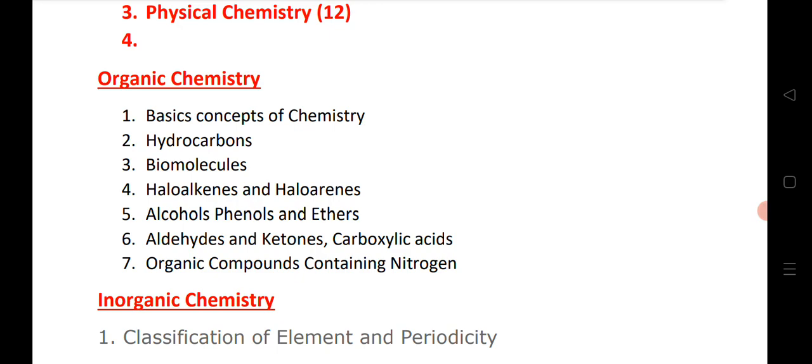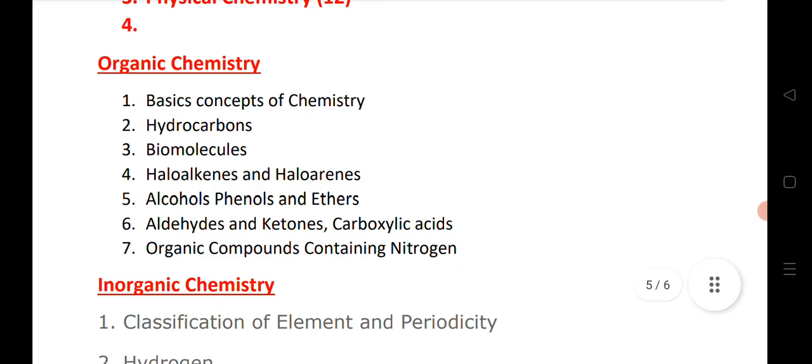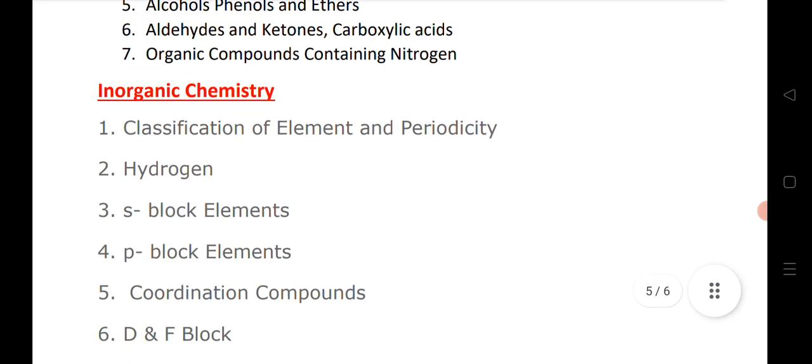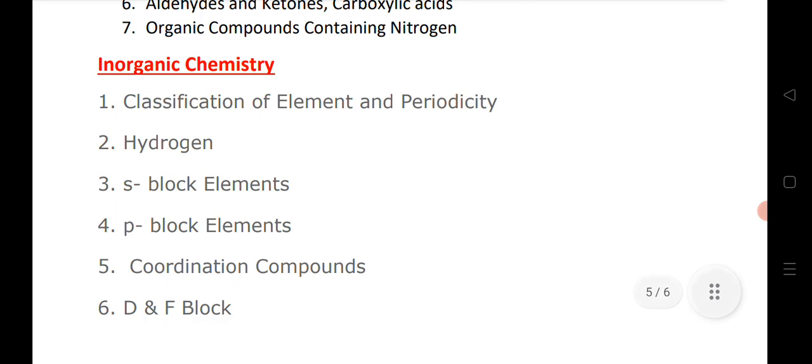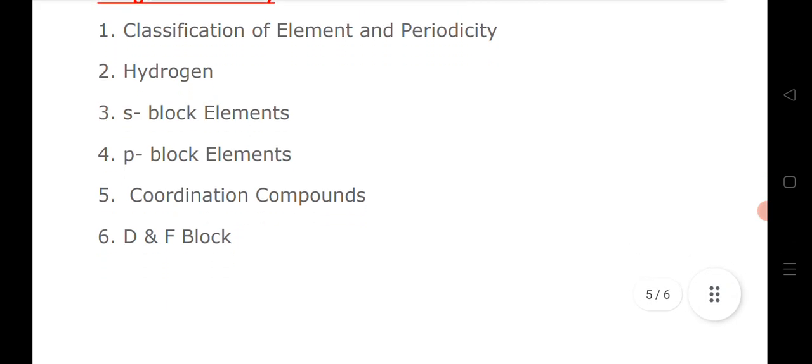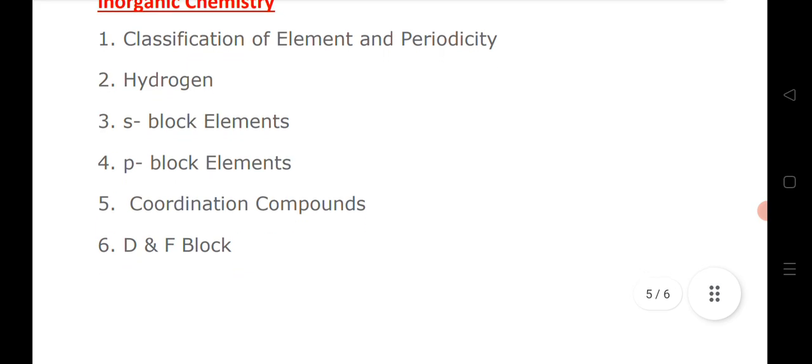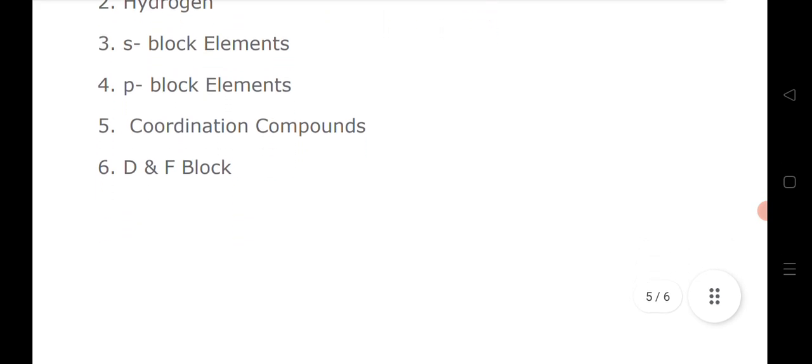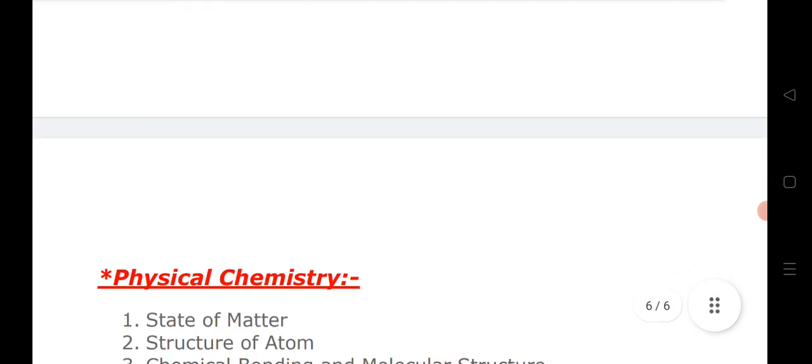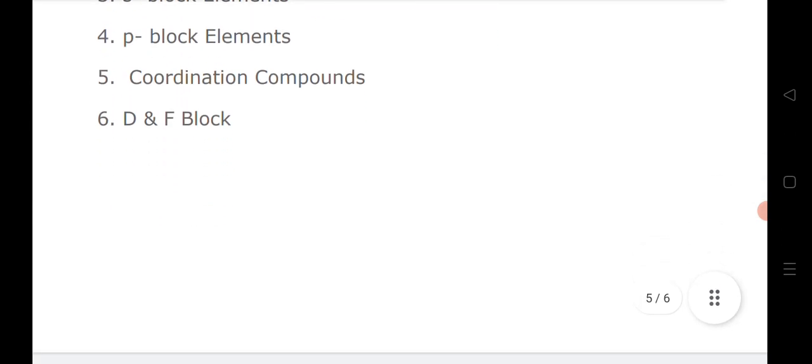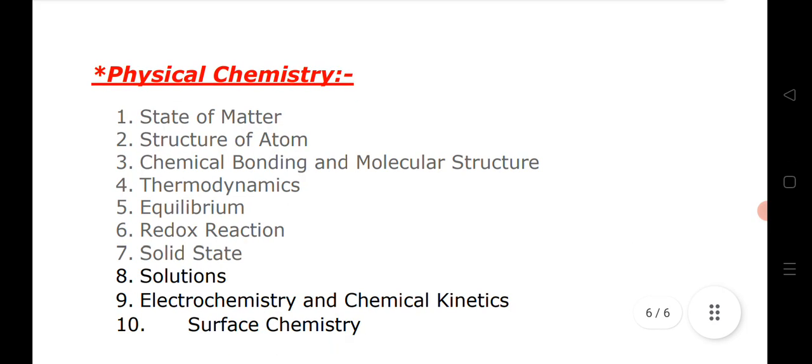Next is inorganic chemistry: classification of elements, hydrogen, s-block, p-block. Inorganic chemistry is 14 questions. If you are reading these chapters - hydrogen, s-block, p-block, coordination compounds, and d and f block - you will get 14 marks from these chapters.